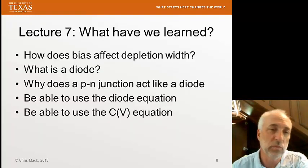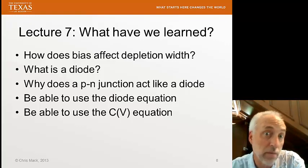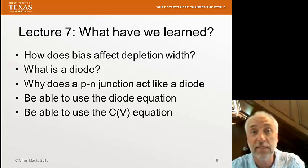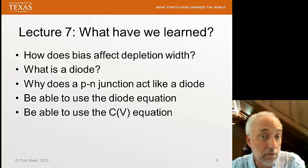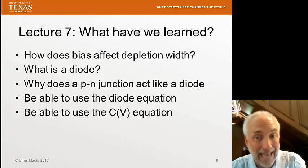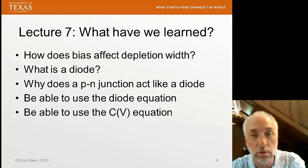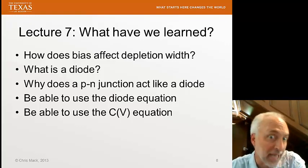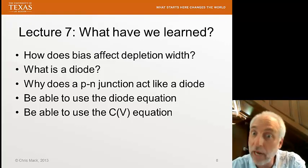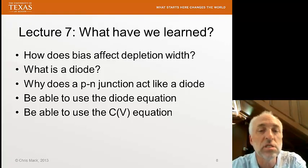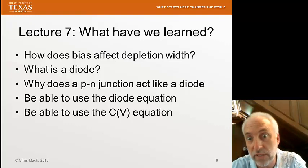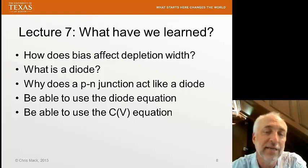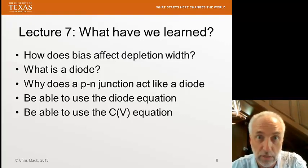What have we learned in lecture 7? Well, you should be able to, after listening and understanding this lecture, to answer these questions. How does bias affect depletion width? What is a diode? How does a P-N junction act like a diode? Why does a P-N junction act like a diode? It's not an ideal diode, but it's pretty close. You should be able to use the diode equation to calculate current for a given bias voltage on the diode. And you should be able to use the CV equation to calculate the capacitance of a P-N junction. Or, in some circumstances, to be able to work backwards and extract, say, an unknown doping concentration from a measured CV curve.